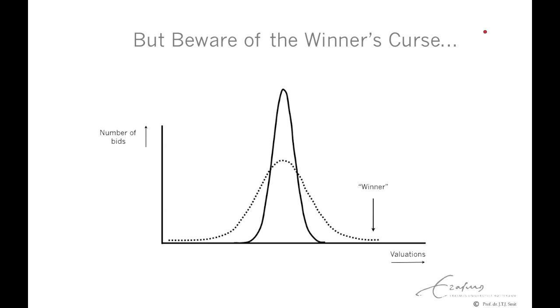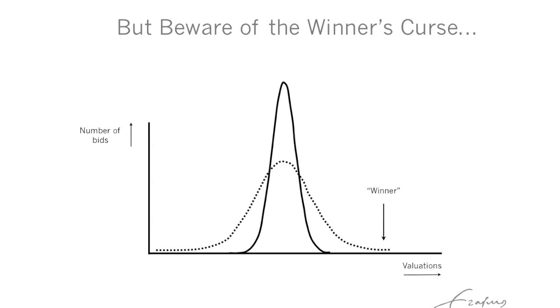In fact, if the average bid is accurate, then the highest bidder will have overestimated the target's value. So, by definition, the winner is likely to have overpaid. This is the winner's curse.